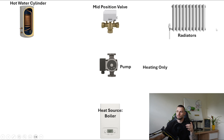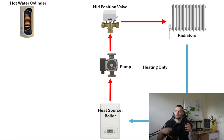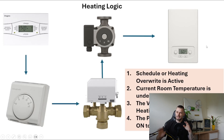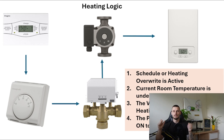Much the same logic applies for heating. If hot water is already satisfied, the system circulates hot water only around the radiators and towel rails. The difference is that instead of the cylinder stat, we use the room thermostat to decide whether heating is demanded — whether the temperature is below whatever we've set — and then it does basically the same thing.